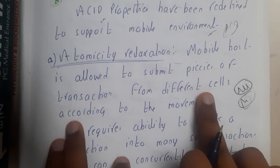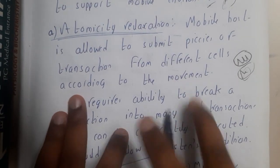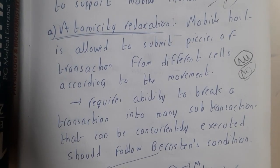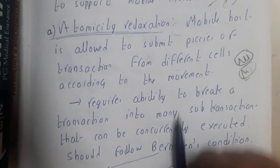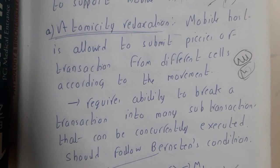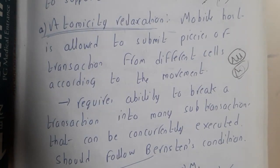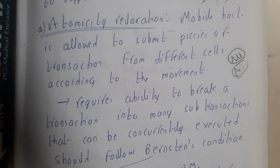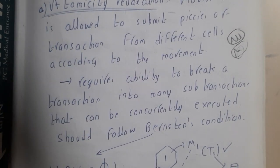Mobile host is allowed to submit pieces of transactions from different cells according to the movement. Mobile is nothing but the concept of movement. So when he is moving, how can you transfer the data properly? That is the reason why if the data is divisible, you will be dividing them and sending them as per your requirements.